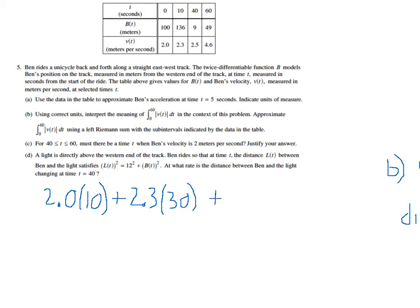And then the last of my three intervals, I'm going to imagine that I'm going 2.5 meters per second for the entire 20 second interval from 40 seconds to 60 seconds. And so I multiply all this out. So this is going to be 20 plus 69 plus 50, which is equal to 139. And the units on that are just meters. And the units should be meters because we're approximating, like we said before, the distance traveled.